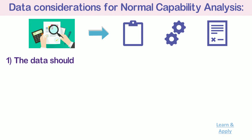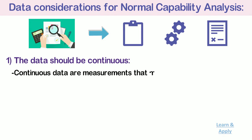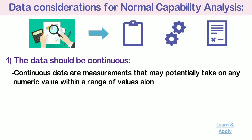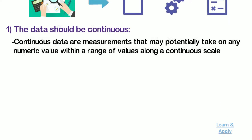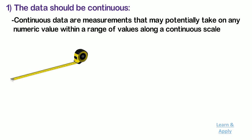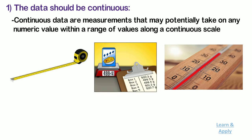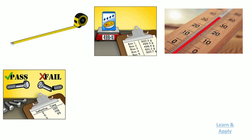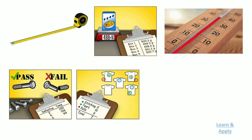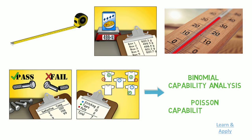First, the data should be continuous. Continuous data are measurements that may potentially take on any numerical value within a range of values along a continuous scale, including fractional or decimal values. Common examples include measurements such as length, weight, and temperature. If you have attribute data, such as count of defectives or defects, use binomial capability analysis or Poisson capability analysis. We will see these types of analysis in future videos.